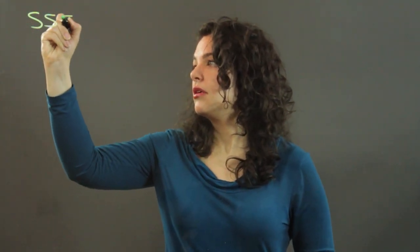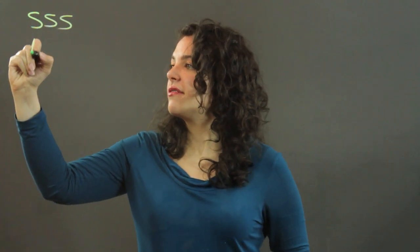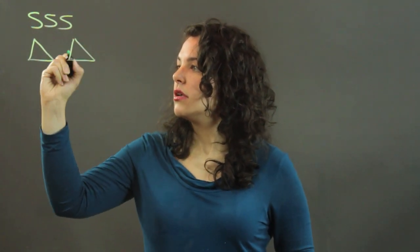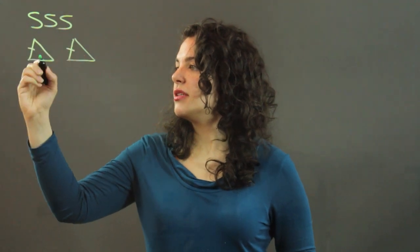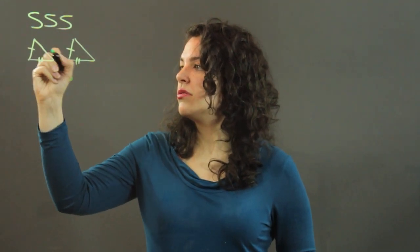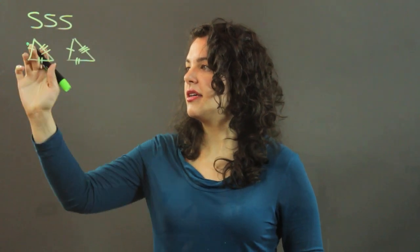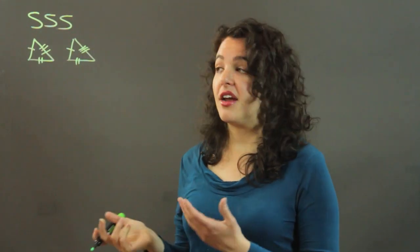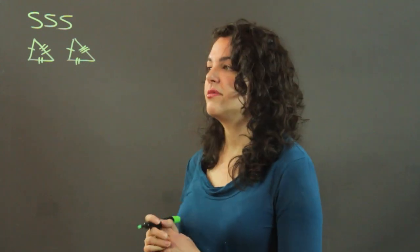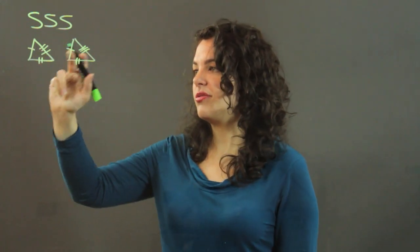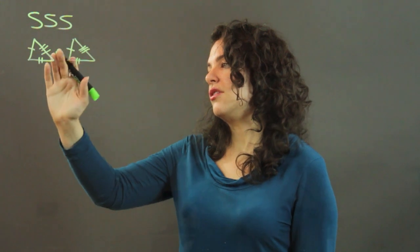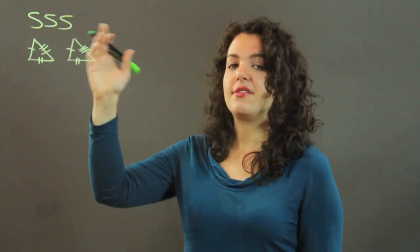We're going to start with what's called the side-side-side postulate, and I'm going to abbreviate it with three S's. So if I have two triangles, and I have one, two, and three pairs of congruent sides, then I know that I have two congruent triangles. So I just need to check that all three sides are congruent with the corresponding three sides of the second triangle.